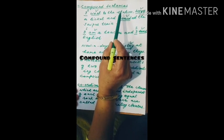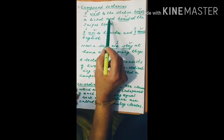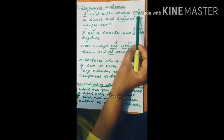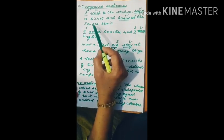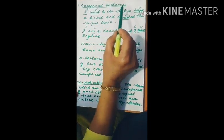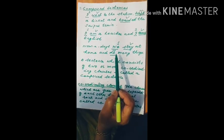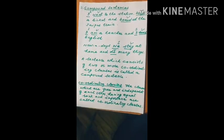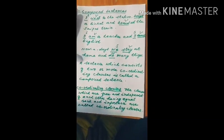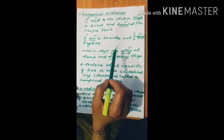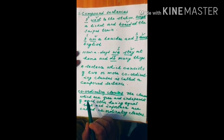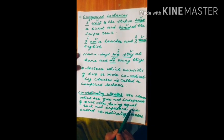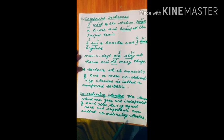The second type of sentences are compound sentences. For example: 'I went to the station, bought a ticket, and boarded the Jappo train.' Here, 'I' is the subject and 'went' is the verb in the first part; 'I' is subject and 'bought' is verb in the second part; and again a subject and verb in the third part. There are three parts, three subjects and three verbs — all independent of each other. A compound sentence is one which contains two or more coordinating clauses. Coordinating clauses are those which are free and independent of each other, having equal rank and importance.